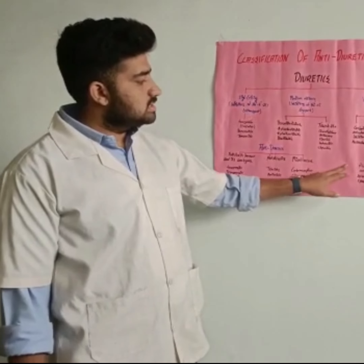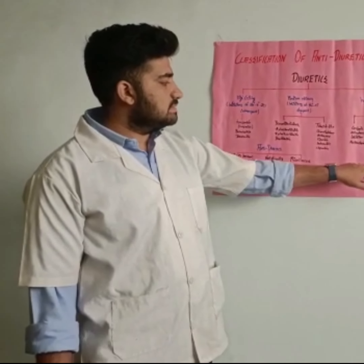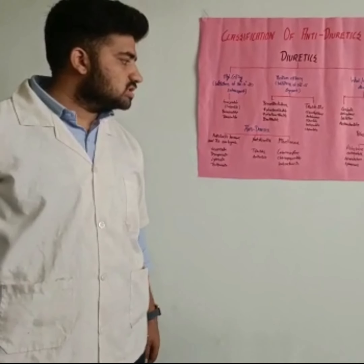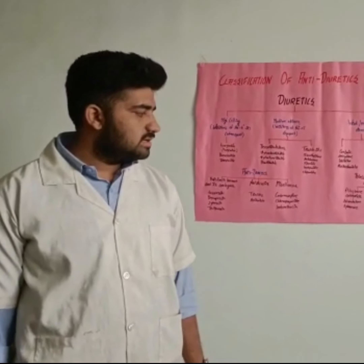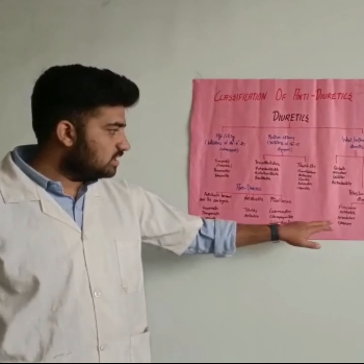Some of the potassium-sparing diuretics include aldosterone antagonists.